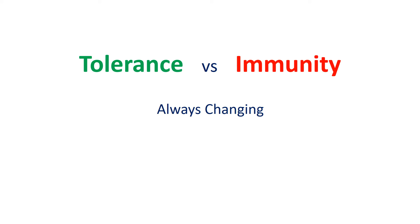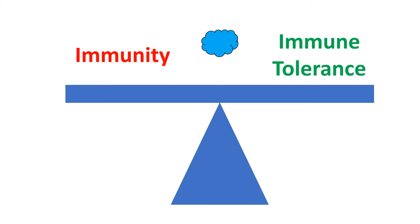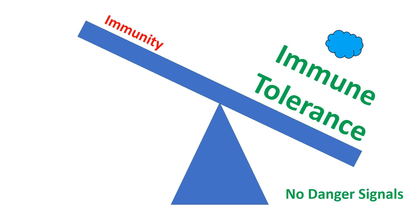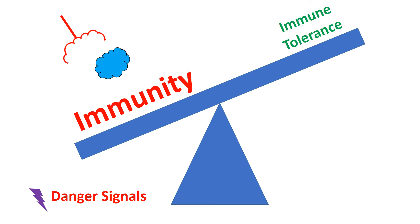The body decides on tolerance and immunity for a specific antigen on a continuing basis. For a given antigen, tolerance and immunity can be depicted on a seesaw diagram. If an antigen is perceived in the absence of danger signals, then the body will be tolerant to the antigen. If an antigen is perceived in the presence of danger signals, then the body will develop immunity against the antigen.